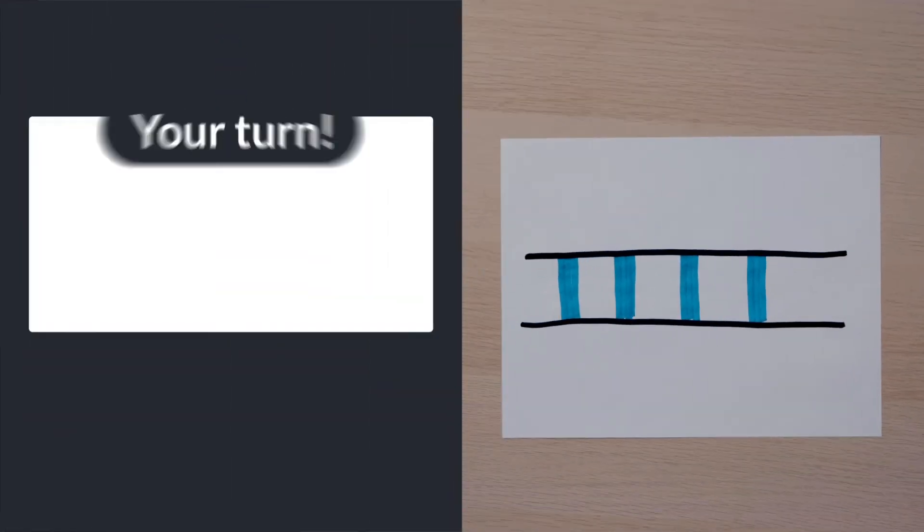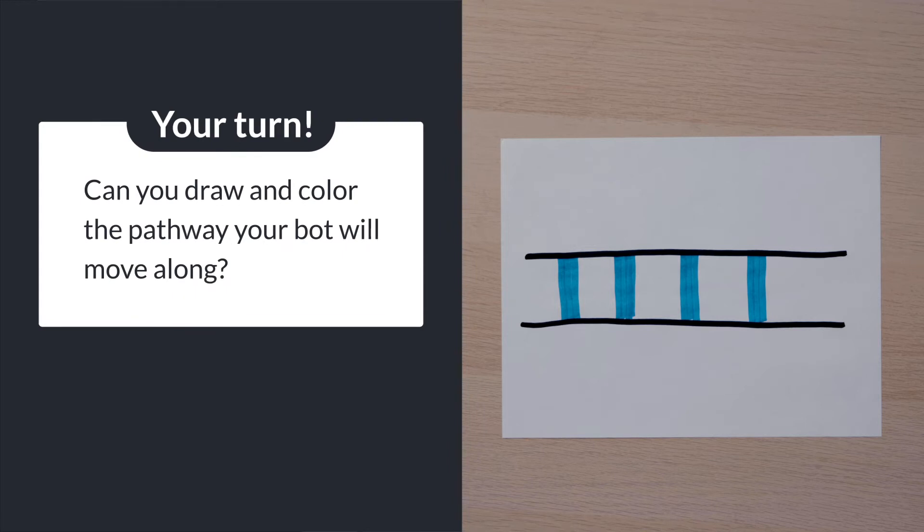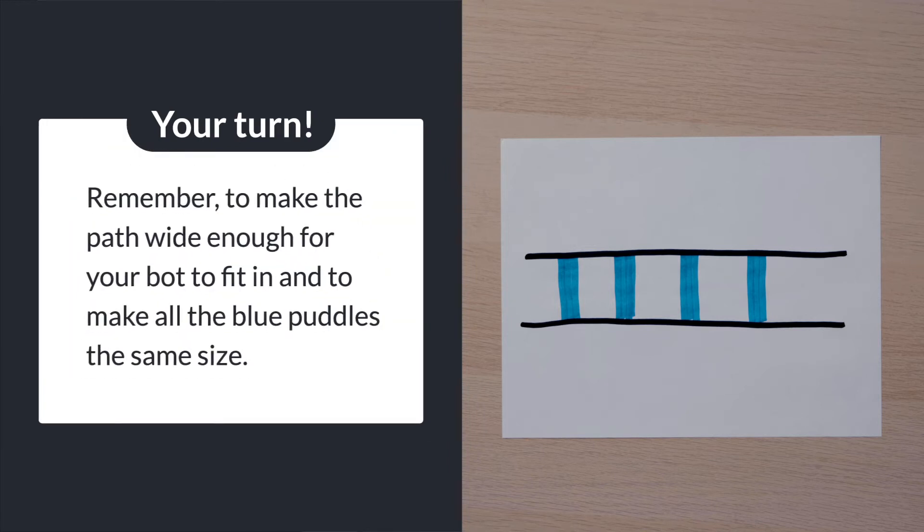Can you draw and color the pathway your bot will move along? Remember to make the pathway wide enough for your bot to fit in it and to make all the blue puddles the same size.